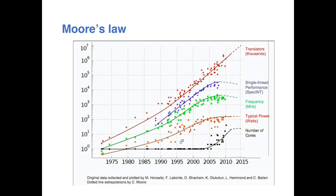The number of transistors increasing as years pass is based on something called Moore's Law. This is not exactly a law - it was a prediction by Gordon Moore, who was a co-founder of Intel. He predicted that the number of transistors will double every 18 months, and more or less we are seeing that happening. You can see how the number of transistors inside a chip is increasing over time. However, you'll also see that other characteristics like maximum frequency and maximum power consumption are more or less flattening out.